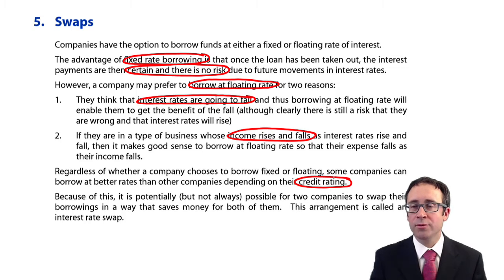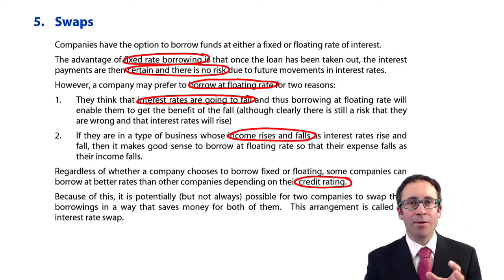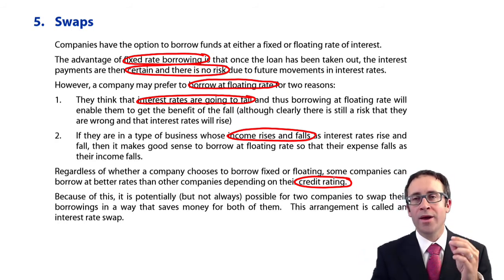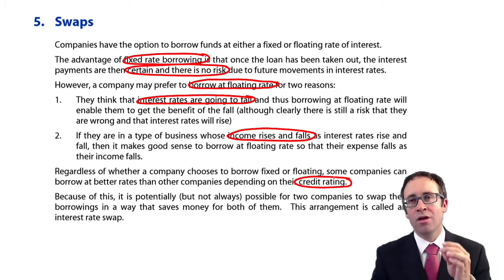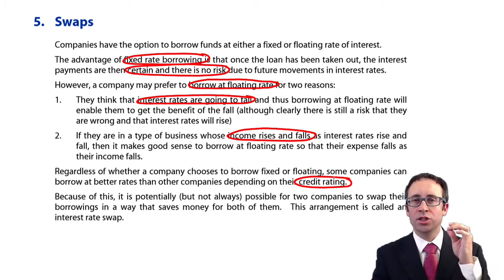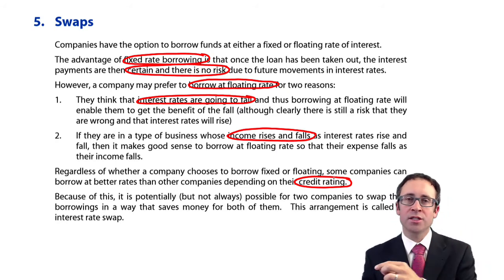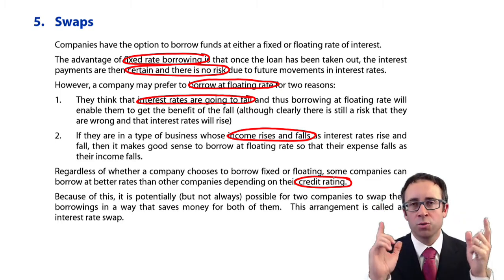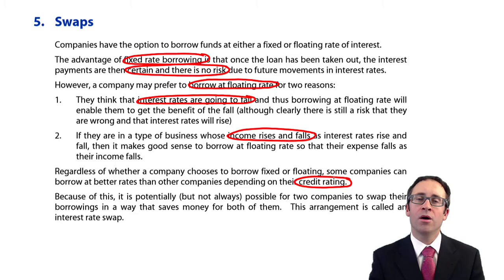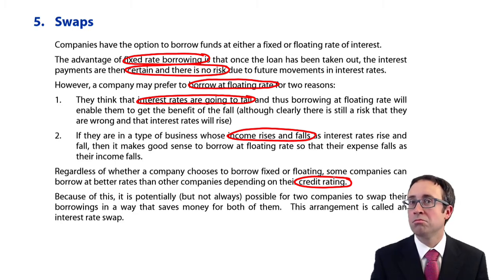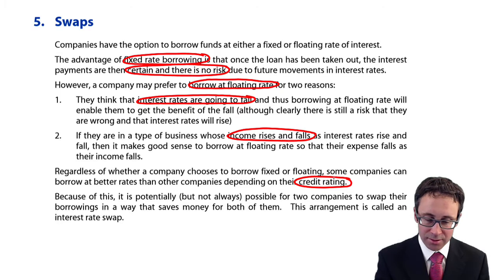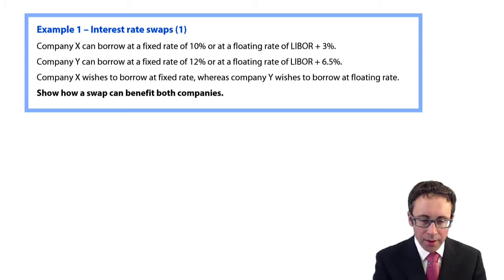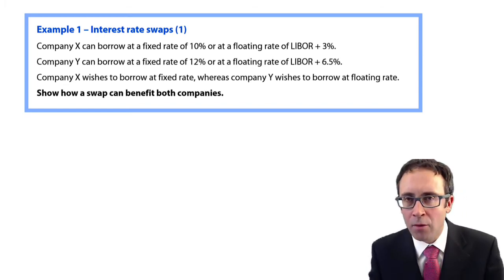What we're going to go through and do is look at this scenario to see how — and I know you don't believe me — we can go through with a loan we have in place to ensure that loan becomes cheaper from swapping the interest payments with another party. You need two parties: ourselves and the counterparty. We swap the interest payments and therefore make it overall cheaper. Let's put it into practice and have a look.